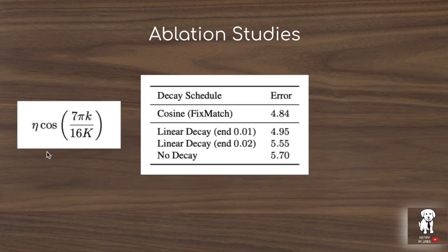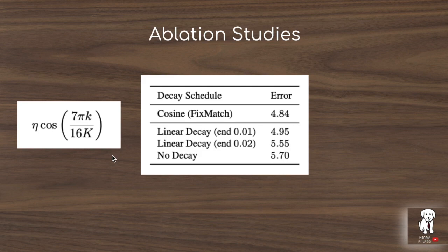They also show the effect of learning rate decay — whether using a cosine schedule, where a cosine function controls the learning rate as a function of training step k relative to total steps K, compared to linear decay or no decay at all. This shows a big variance of almost 1% in error rate between cosine annealing and not changing the learning rate at all.